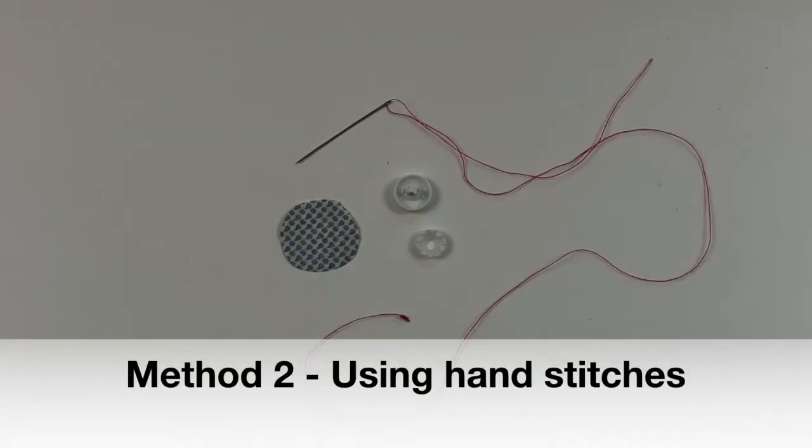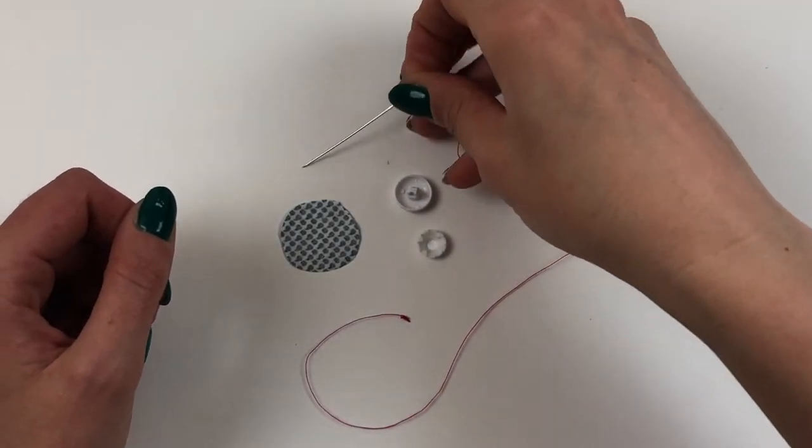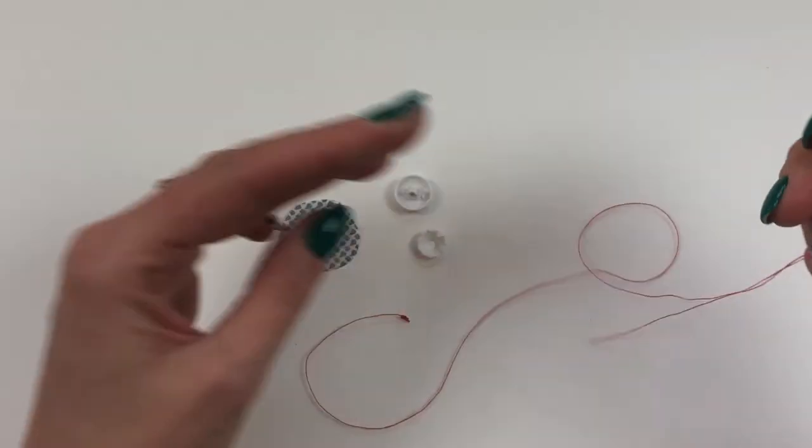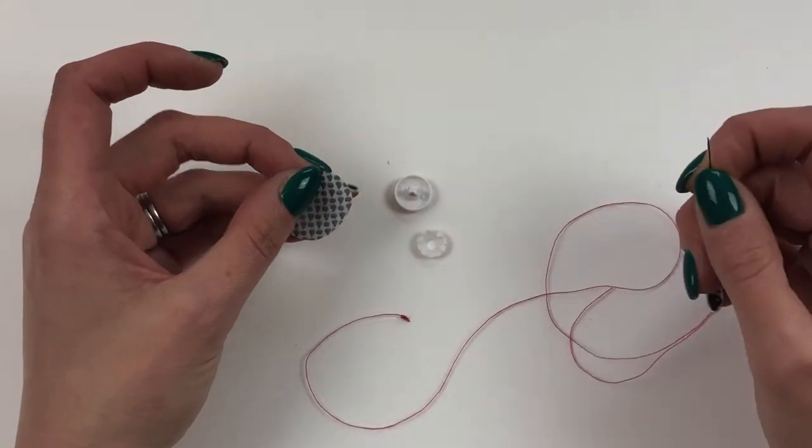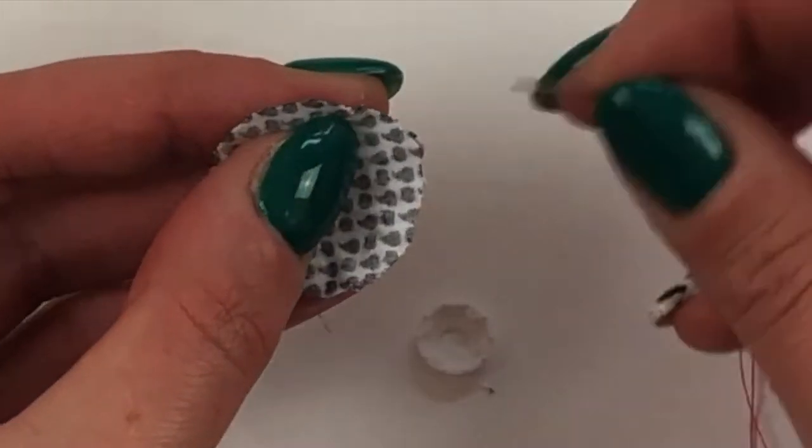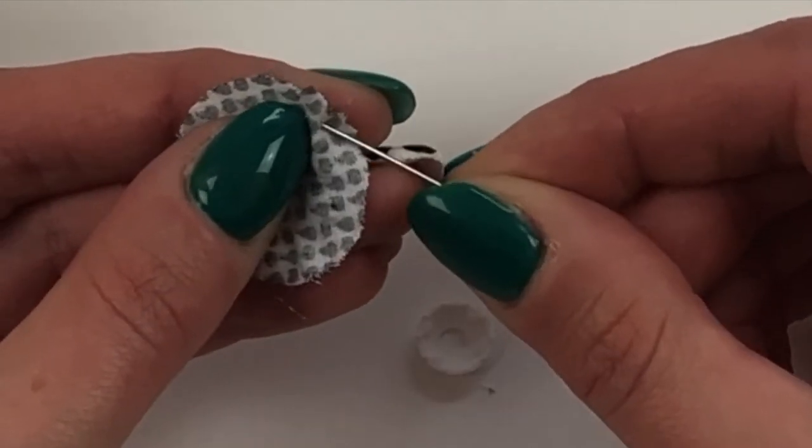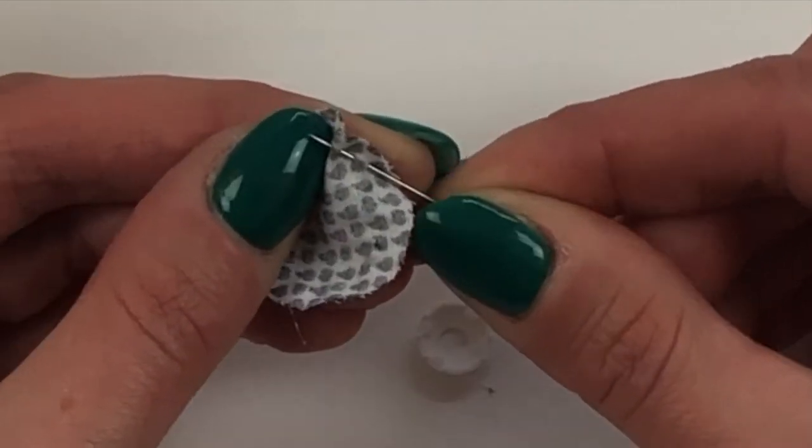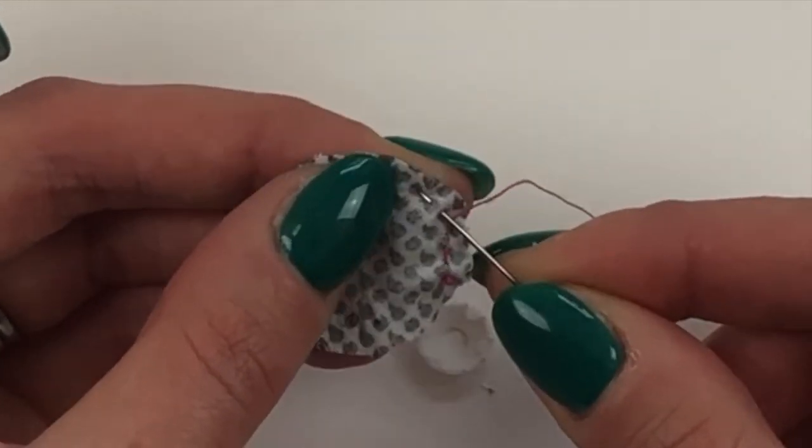If you don't have the covered button tool don't worry, I'll show you another method which just uses hand stitching to help cover your button. So cut yourself another piece of fabric, take a needle and thread and tie a knot in the end of your thread. I'm going to be working just a few millimeters away from the edge of the fabric and I'm going to make small stitches all the way round in a circle.